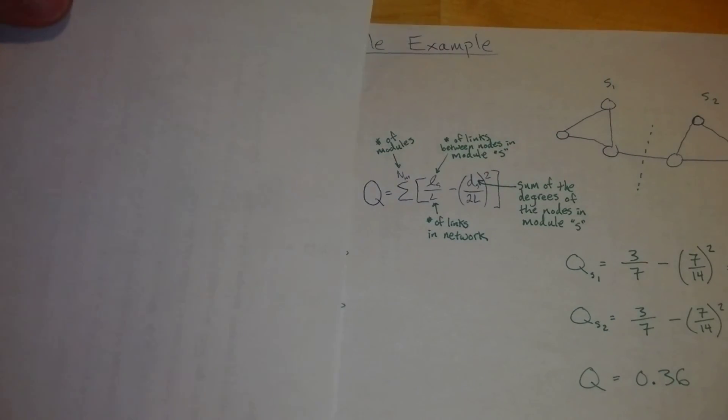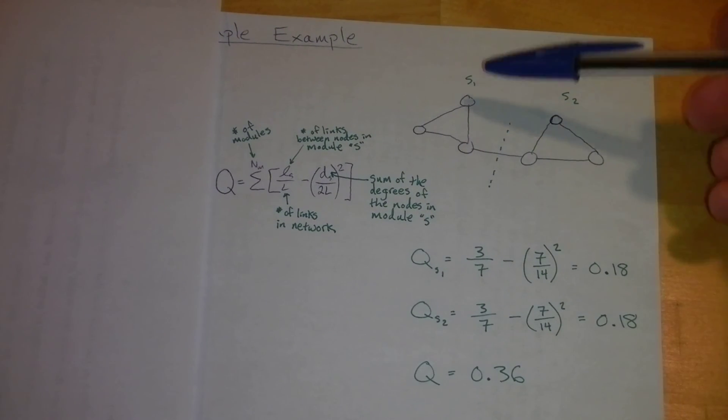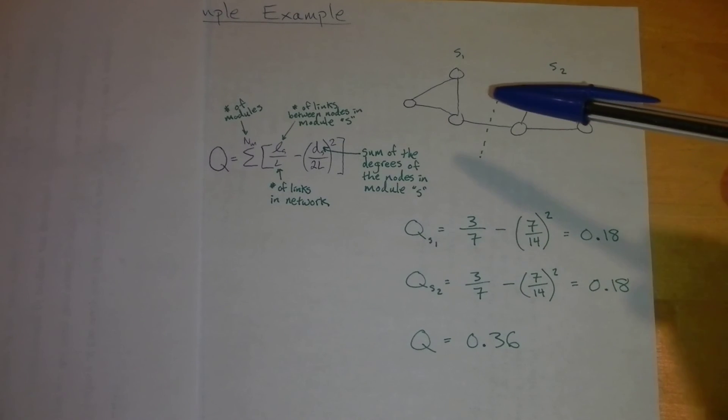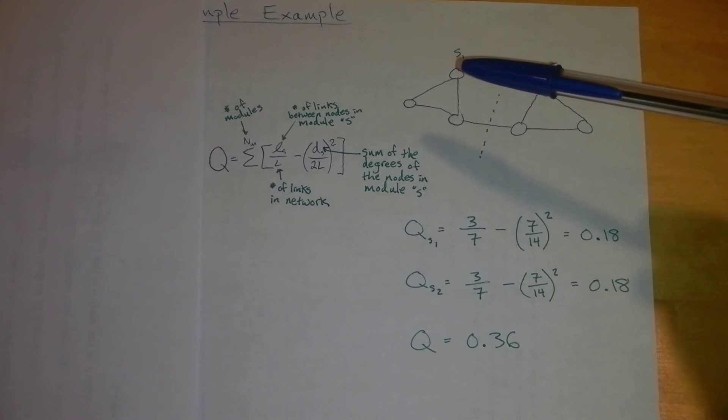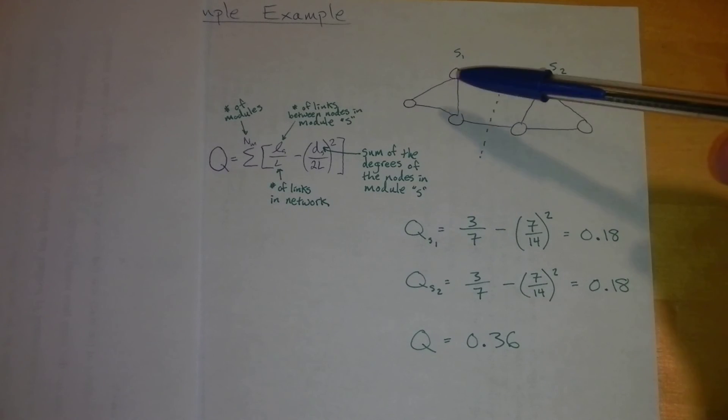After that modularity value is calculated, we create a new partition. Now we've got the partition going down the middle, and we just repeat the process. Again, it's like we talked about before. Number of links between the nodes is 1, 2, and 3 within this module.